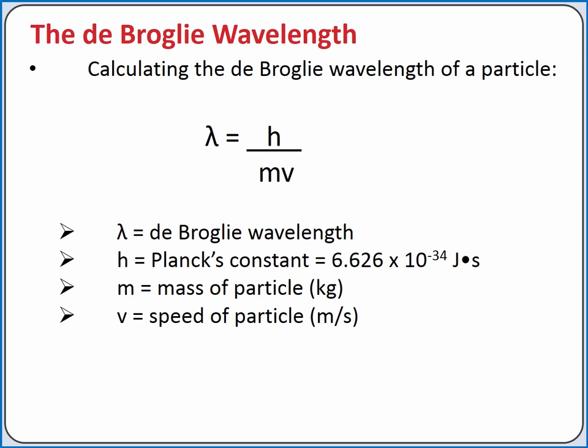If we calculated the De Broglie wavelength of an electron, it would be on the scale of an atom. So the De Broglie wavelength is significant for the electron compared to its size.